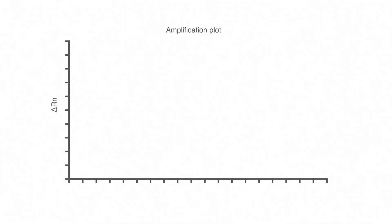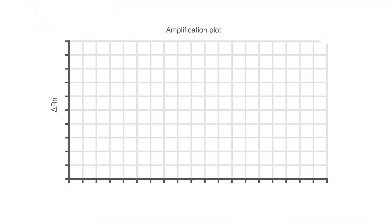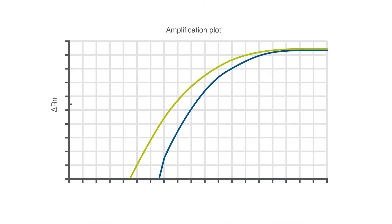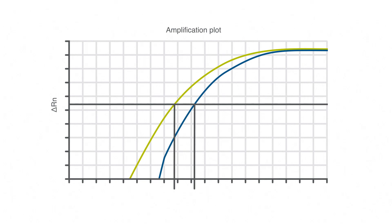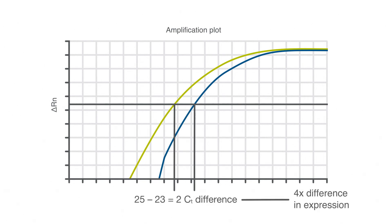Keep in mind that a difference of one cycle equates to a two-fold difference in the initial template. For a control with delta CT values that varied over a two-cycle range, there would be a nearly four-fold difference in expression levels. If we were to select a normalizer gene with expression that varied by two or four-fold between samples, the final calculations would be in error by the same factor.